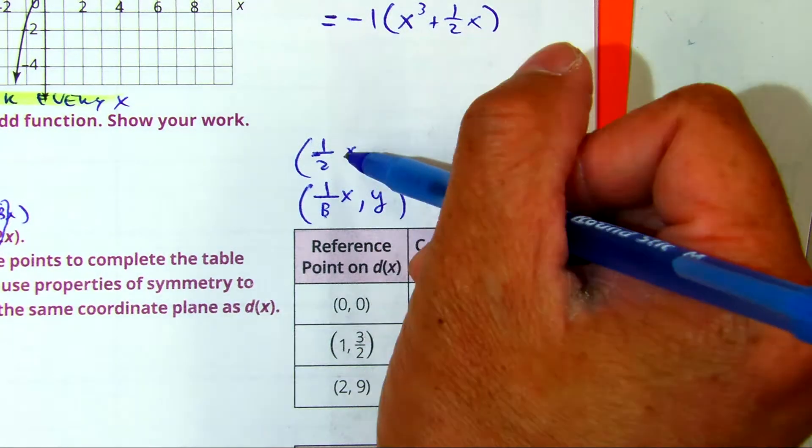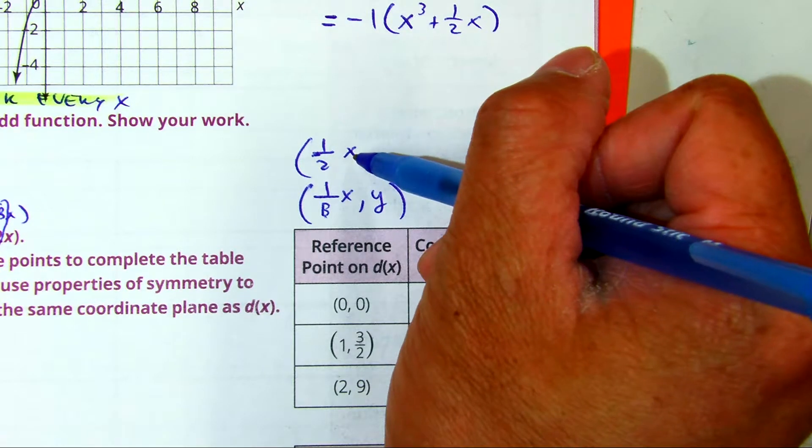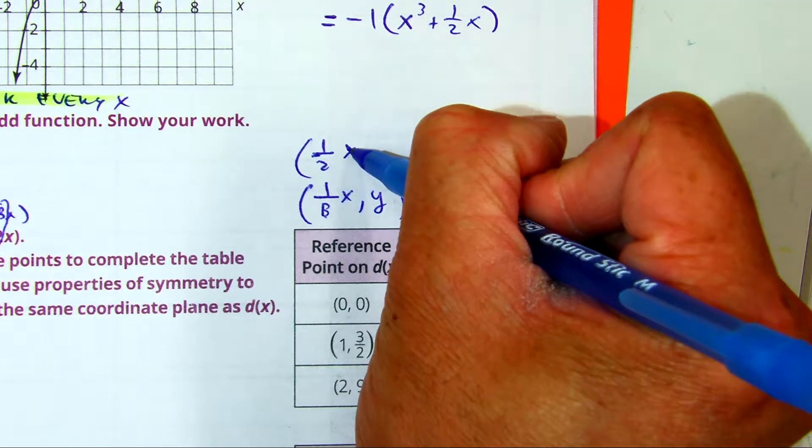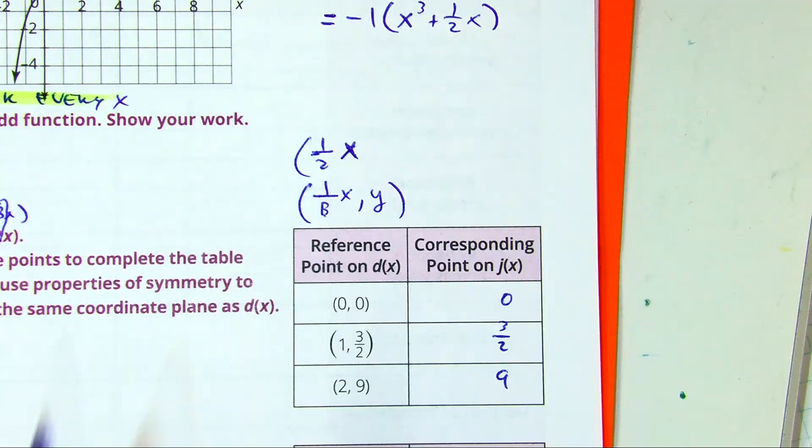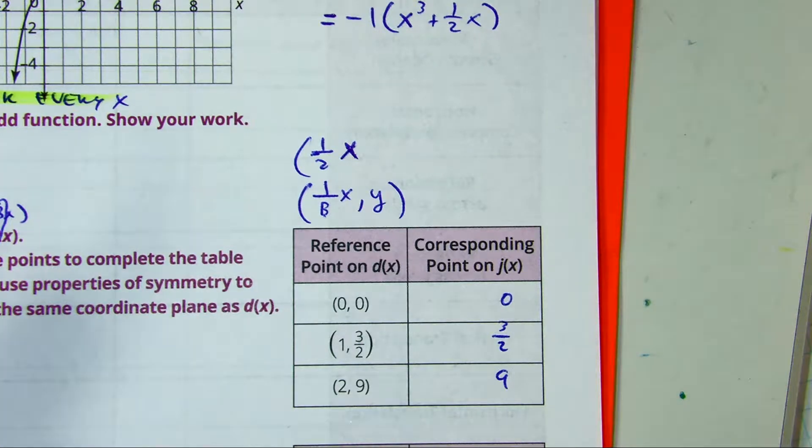1 half times X. Here's a question. Where's the X? It's kind of in the middle, right? I'm going to just draw this line, okay? And then I just want you guys to say, oh, okay?